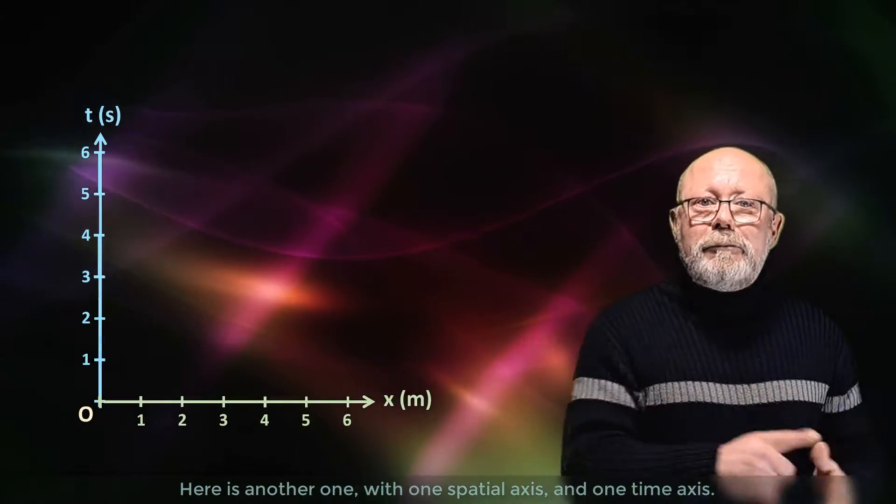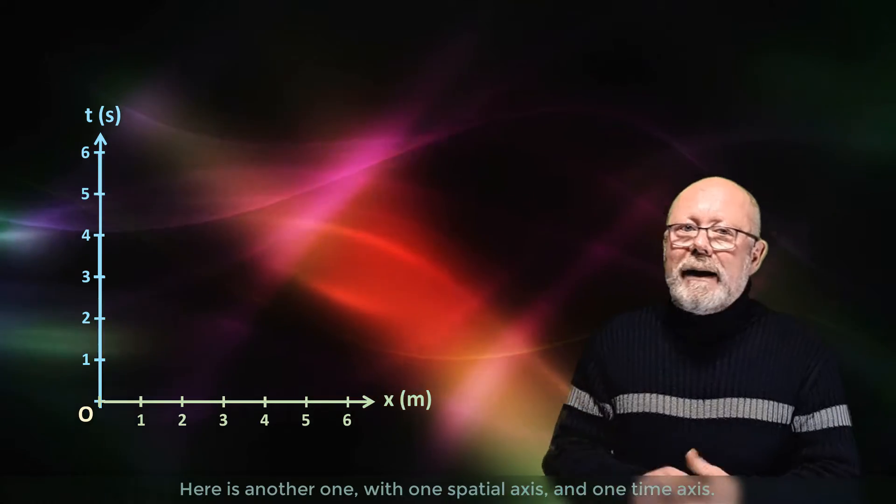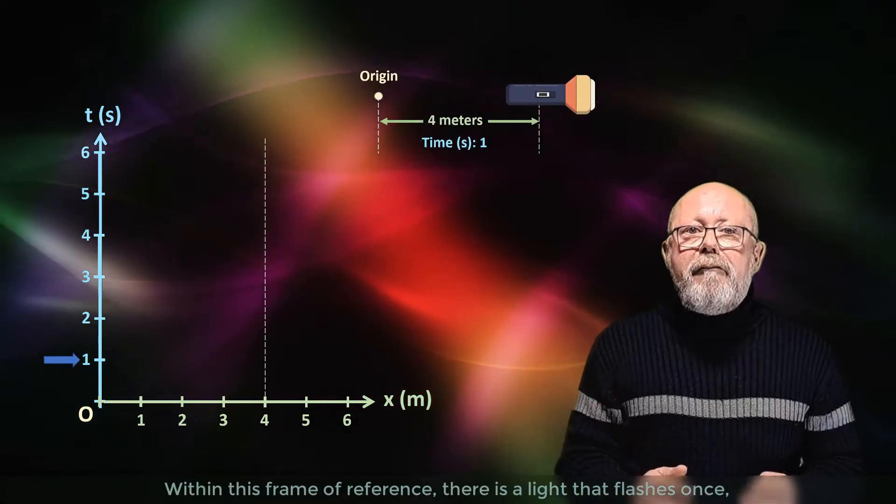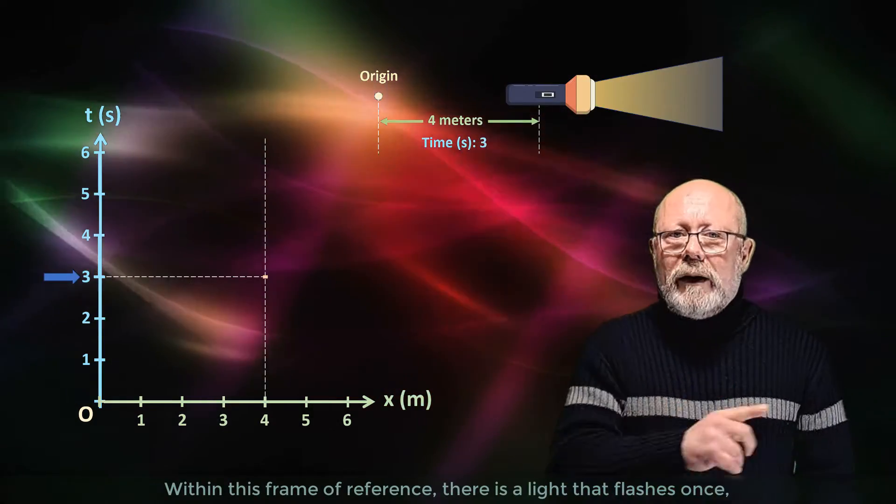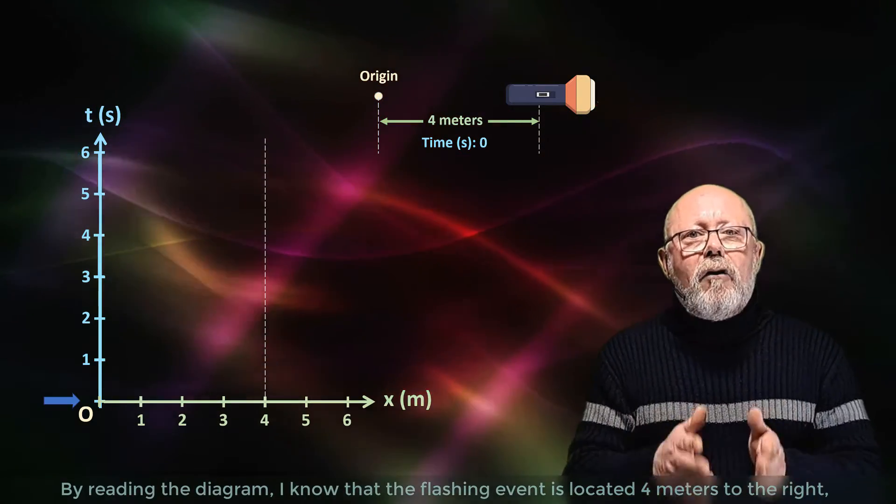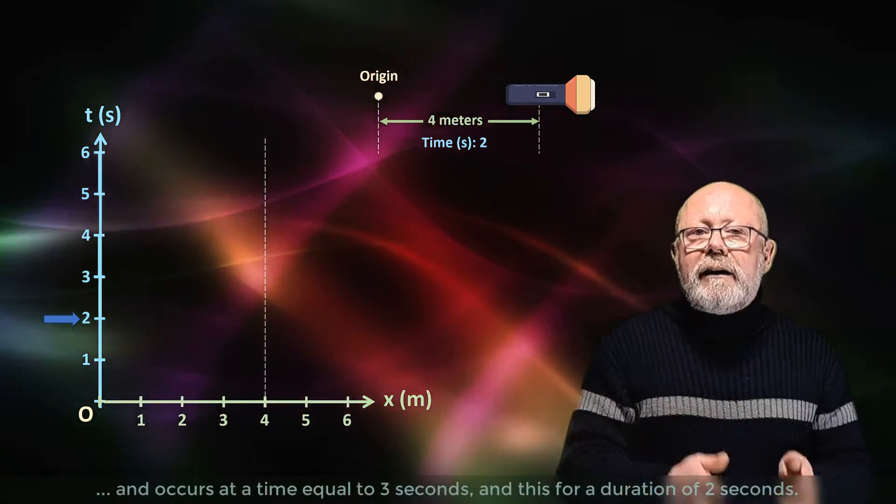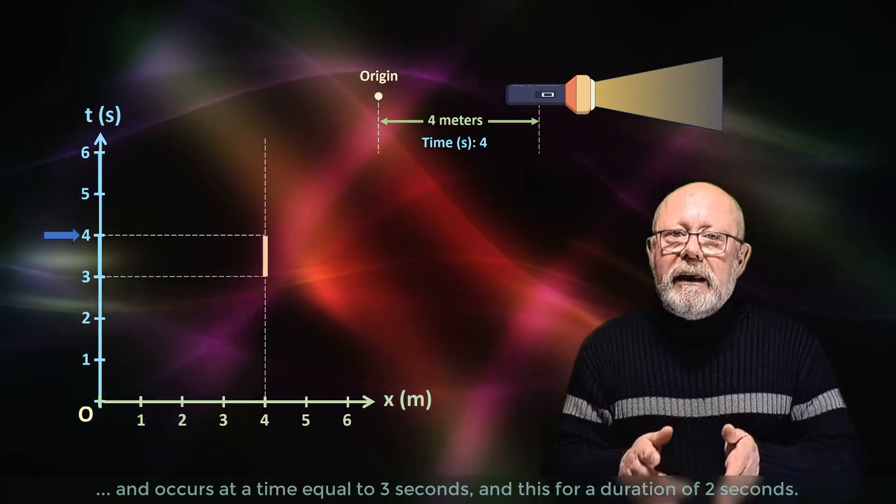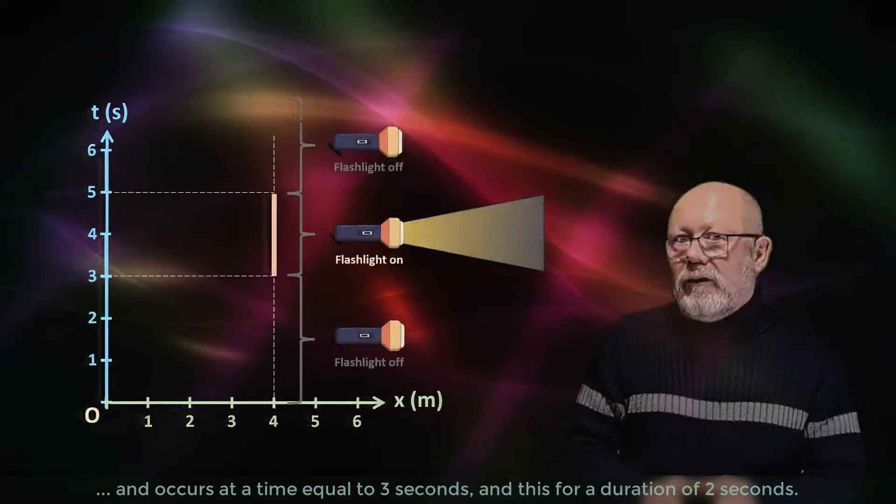Here is another one with one spatial axis and one time axis. Within this frame of reference, there is a light that flashes once. By reading the diagram, I know that the flashing event is located 4 meters to the right and occurs at a time equal to 3 seconds for a duration of 2 seconds.